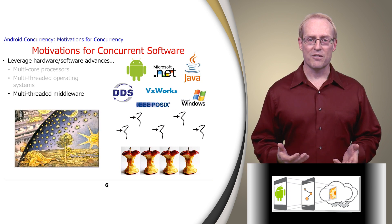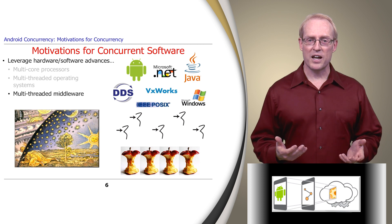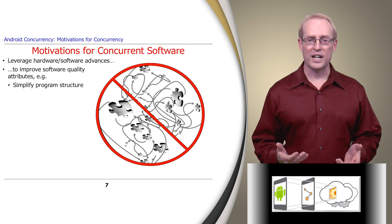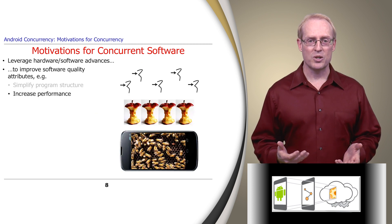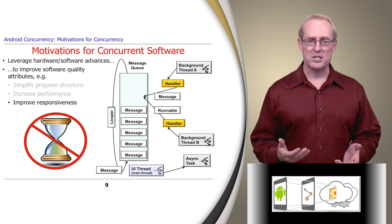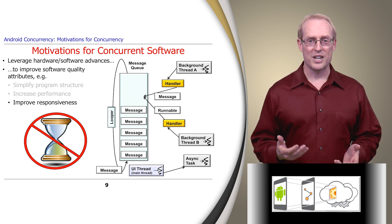Knowledge of concurrency is therefore necessary to program multi-thread and multi-core systems effectively and improve various software quality attributes, such as simplifying program structures to avoid overly complex event-driven architectures, increasing performance by overlapping communication and computation to run in parallel, and improving responsiveness by processing user interface operations in a different thread than background processing operations.